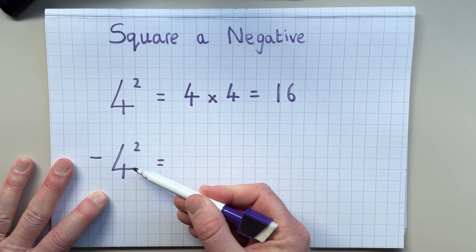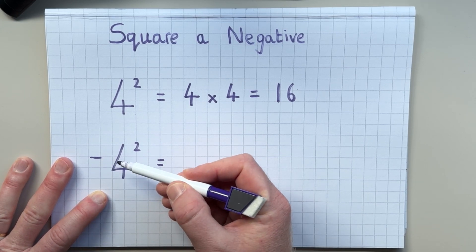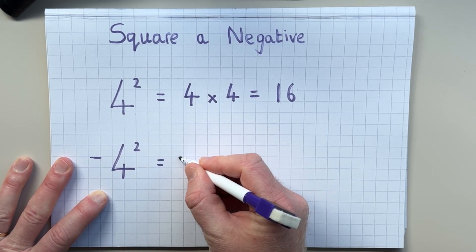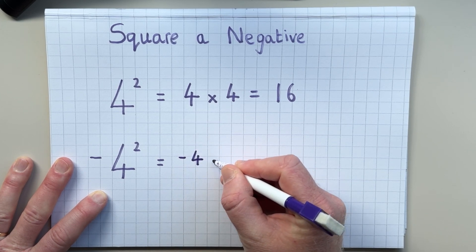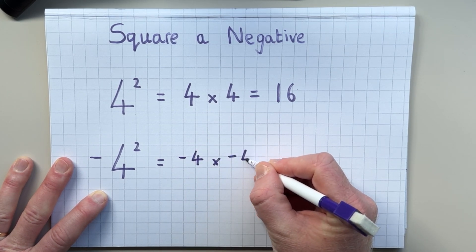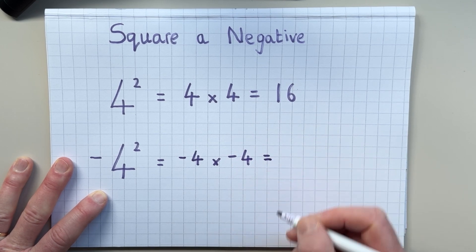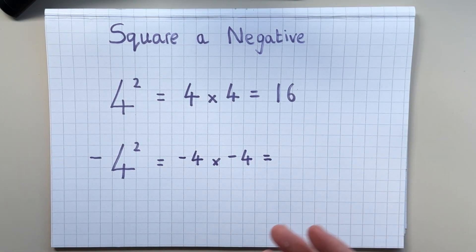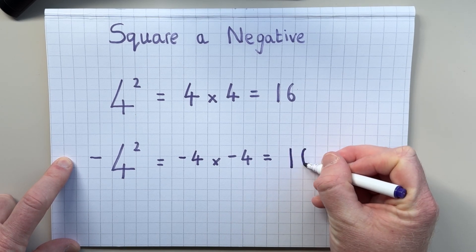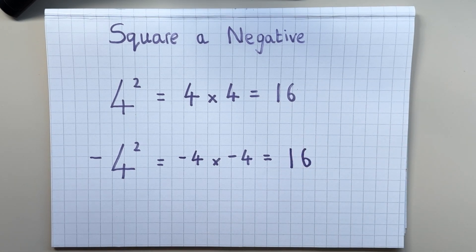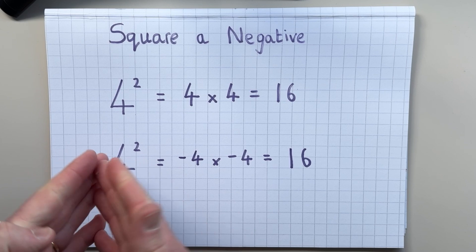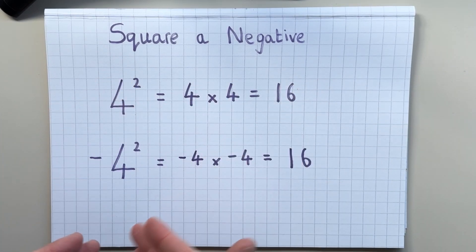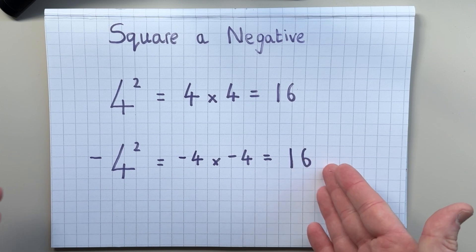Now we have negative 4 squared. Now if we think carefully about what this squared sign means, it means to multiply negative 4 by itself. So negative 4 multiplied by negative 4. And anybody who has previously learned what happens when we multiply two negative numbers together will know that it always leads to a positive number. So if you multiply two negative numbers together, it makes a positive number. So the answer to 4 squared is 16, and the answer to negative 4 squared is also 16.